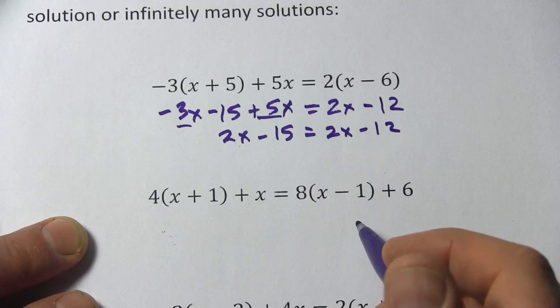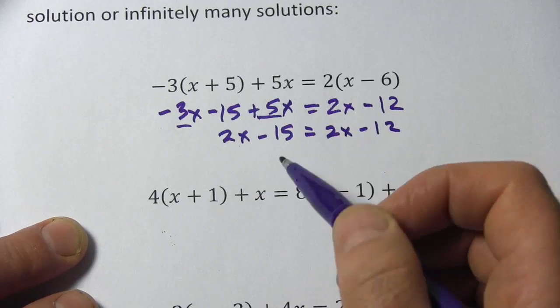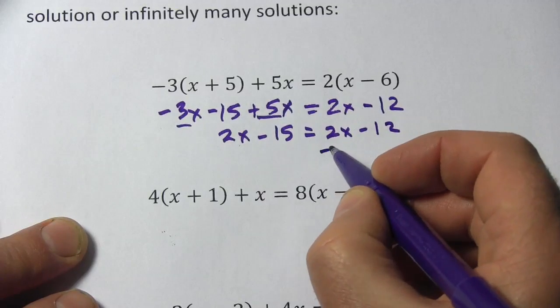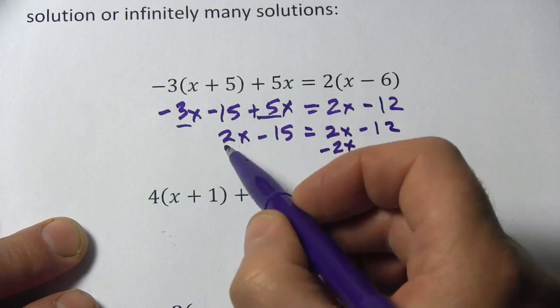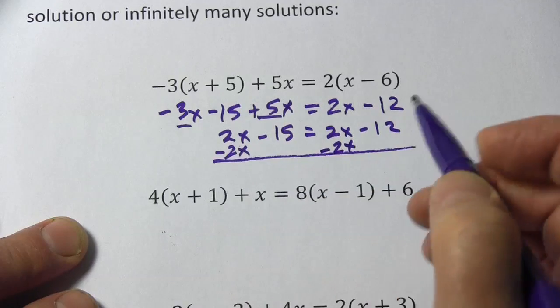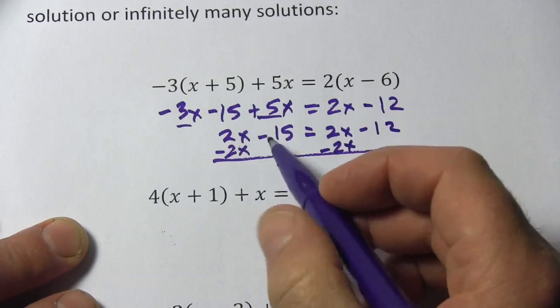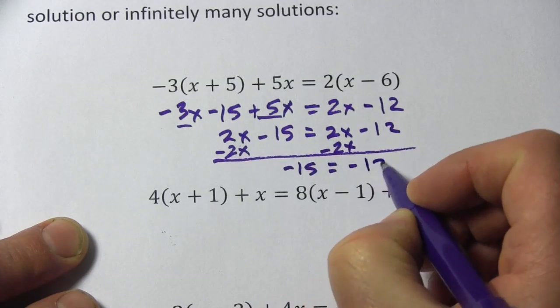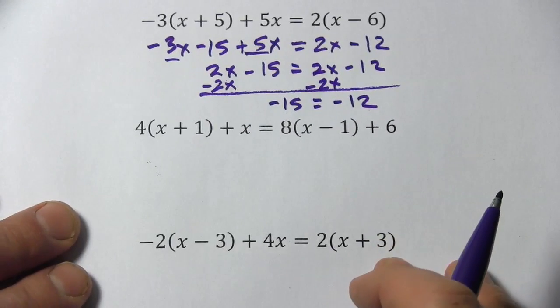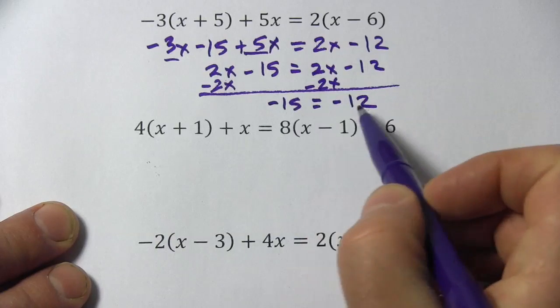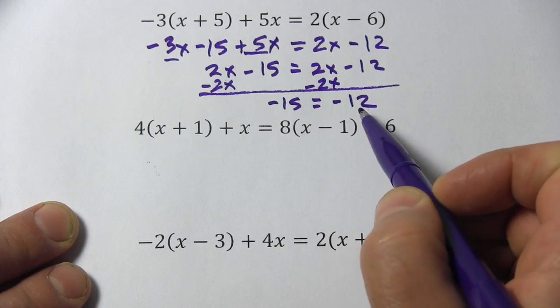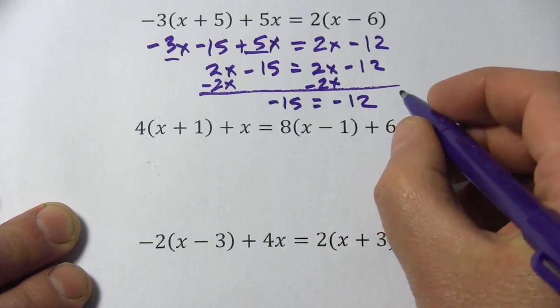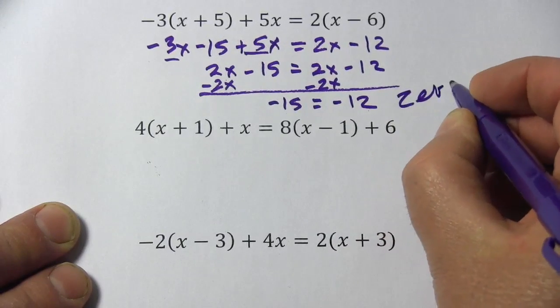You might already start to notice something funny here, but the next step if we're solving this in the normal way would be to try to get rid of one of these x terms. I'm going to try to get rid of this 2x over here by subtracting 2x. Of course, I have to do that over here too. And when you do that, all your x's disappear. This is 0. This is 0. This is 0. We just have negative 15 equals negative 12. Now what does that mean? Well clearly this statement is false. Negative 15 does not equal negative 12. If that's what happens when you try to solve an equation, that means there are zero solutions.